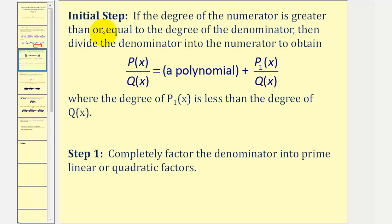Before we perform partial fraction decomposition, as an initial step, if the degree of the numerator is greater than or equal to the degree of the denominator, we must divide the denominator into the numerator to obtain a polynomial plus a rational expression, where the degree of p sub one is less than the degree of q in our denominator. So if the degree of p is greater than or equal to the degree of q, we perform long division, resulting in a polynomial plus a rational expression where the degree of p sub one will be less than the degree of q.